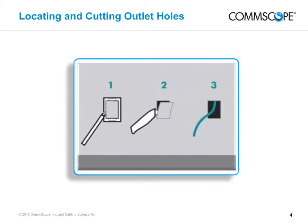Once outlet locations are determined, cut the holes as required. Carefully check the area for any possible obstructions, such as wall studs, plumbing or electrical wires. Be aware that obstructions like windows or interior openings like kitchen pass-throughs may cause problems with dropping cables from above. Pocket doors are another concern — make sure the planned outlet is outside of their open range. Keep an eye open for creative routes to hide cable, such as running within closets.